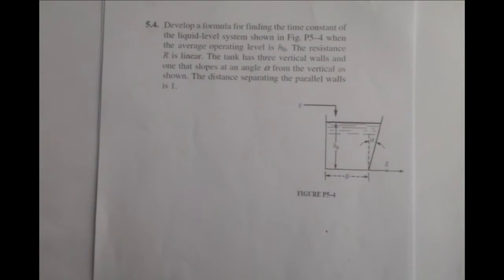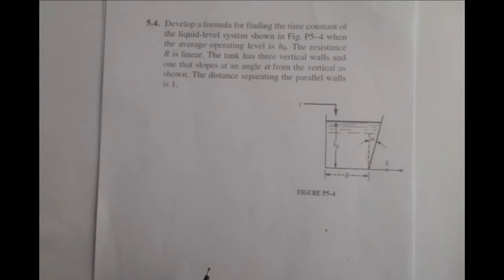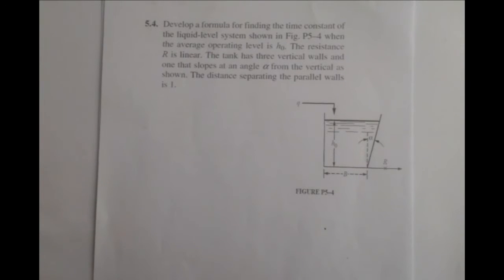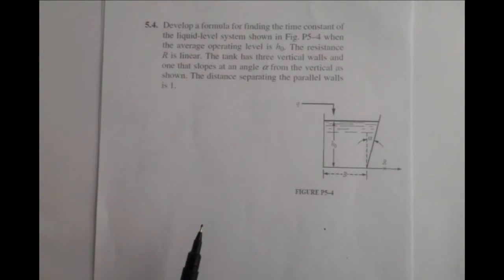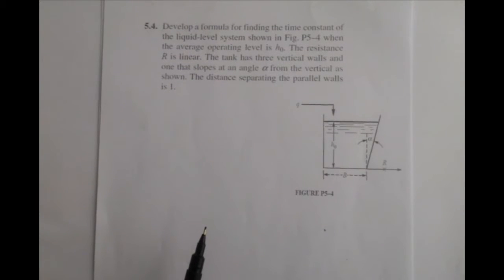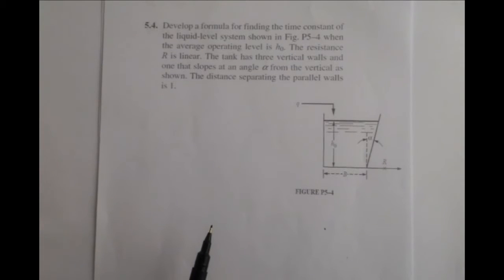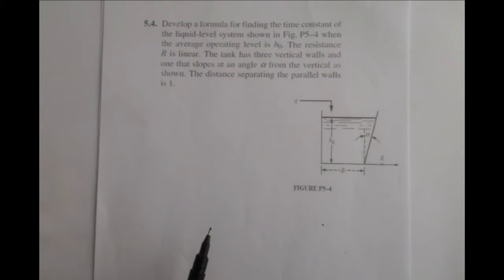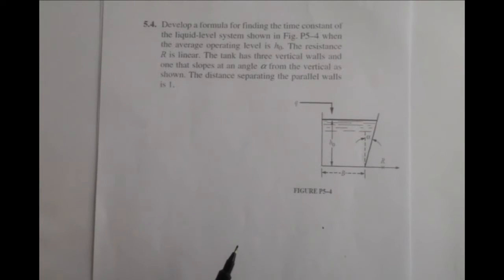The problem states that we need to develop a formula for finding the time constant of the liquid level system shown in figure P5-4. When the average operating level is H sub-zero, the resistance R is linear and the tank has three vertical walls and one that slopes at an angle alpha from the vertical as shown. The distance separating the parallel walls is l.